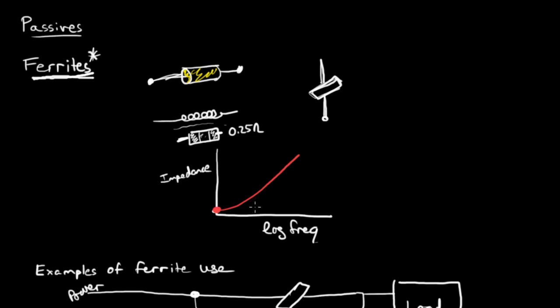They can suppress high frequency oscillations. They can act as chokes to keep high frequency signals from making their way into other parts of the circuit. And are generally very useful for those kinds of purposes. Let me walk through three examples of how you might use ferrites.